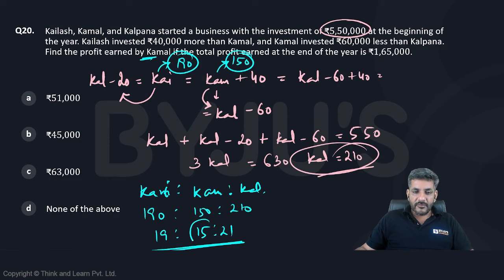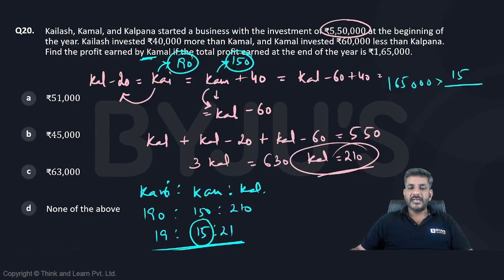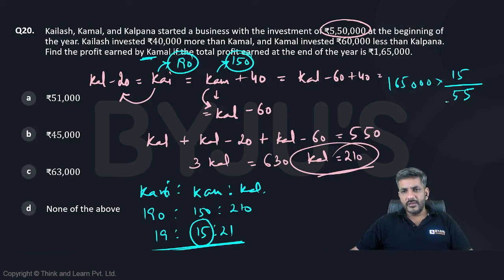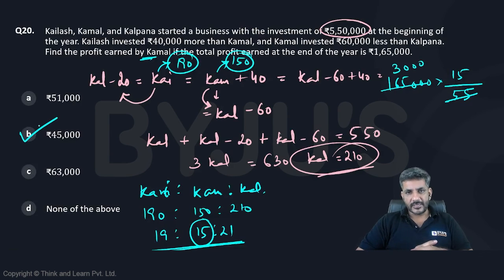What is the share of Kamal? It is 15 out of the total, out of 165,000. So 165,000 multiplied by 15 upon (15 plus 19 plus 21). 15 plus 19 is 34, and 34 plus 21 equals 55. 55 cancels out into 3,000. So 15 times 3,000 gives 45,000 as the profit earned by Kamal.